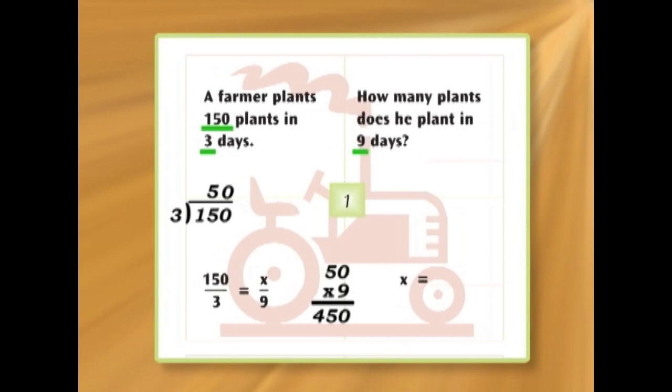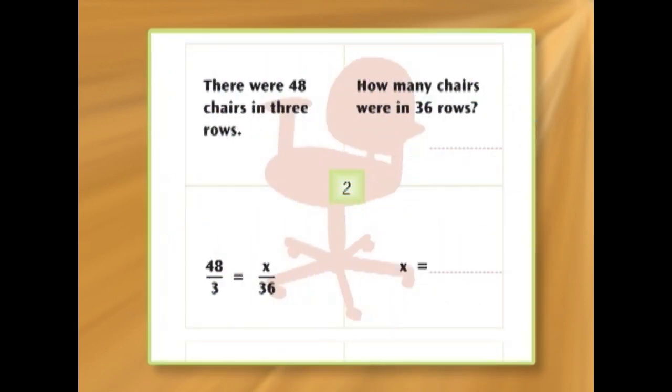So, a farmer plants 150 plants in 3 days. That means he plants 50 in one day. So, in 9 days, he'll plant 450. All these problems are done in exactly the same way. But let's look at number 2, which is quite difficult. Because the numbers are high. But we'll use exactly the same formula.